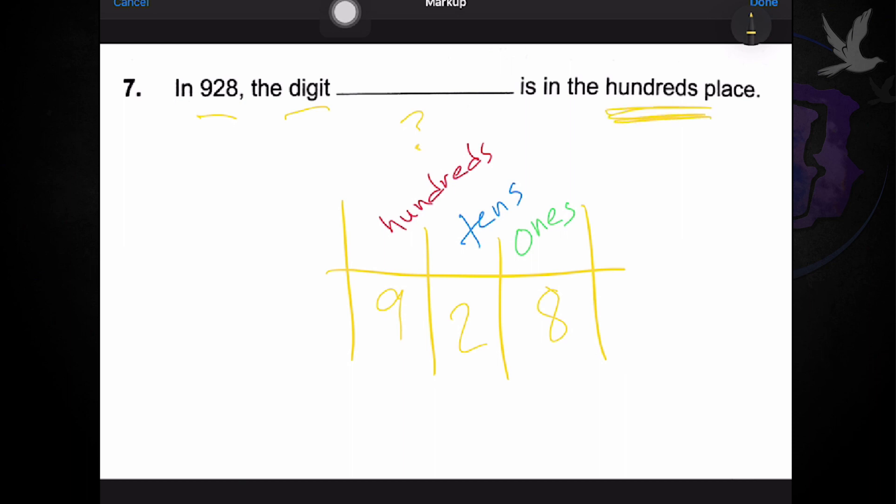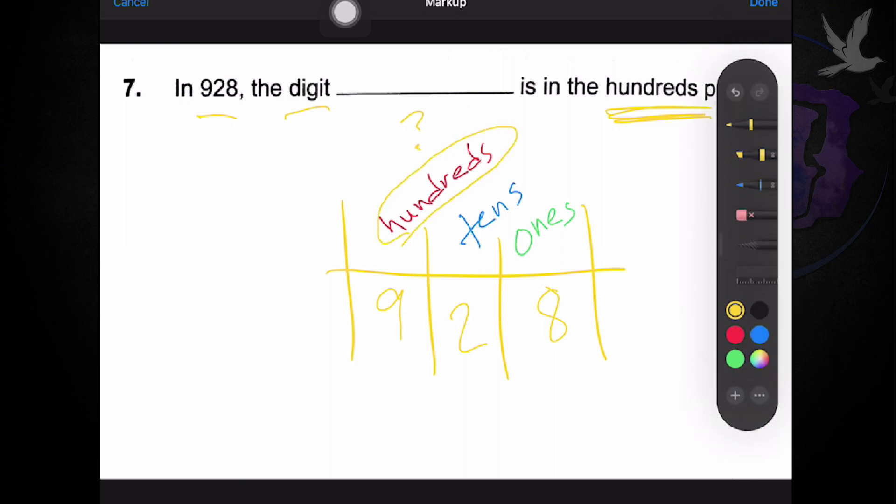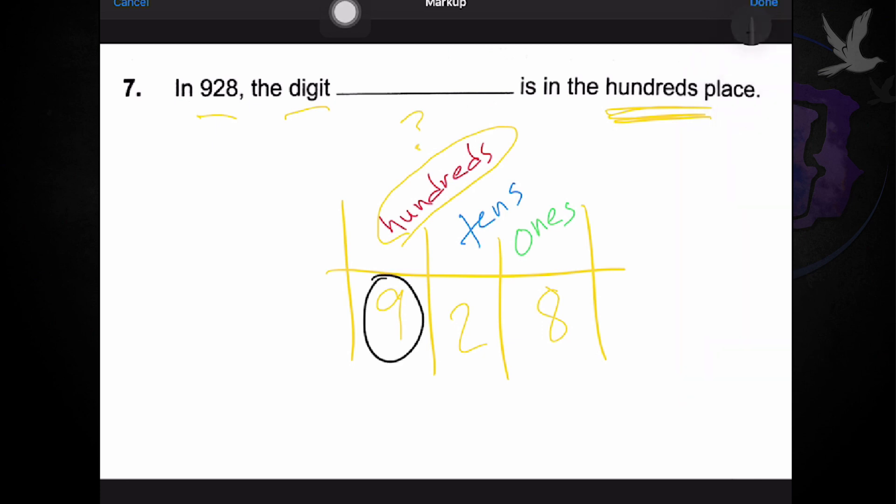So, it says here that the digit blank is in the hundreds place. Which digit is in the hundreds place? Where is the hundreds place here? The hundreds place is here. And what digit is in there? It's 9.